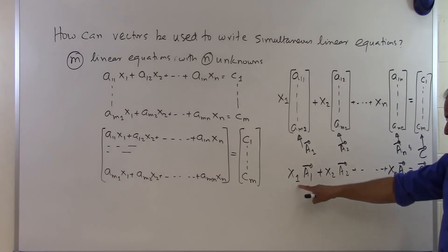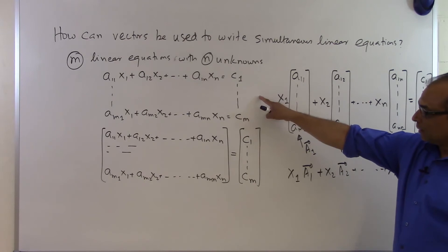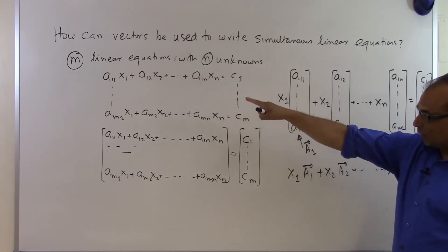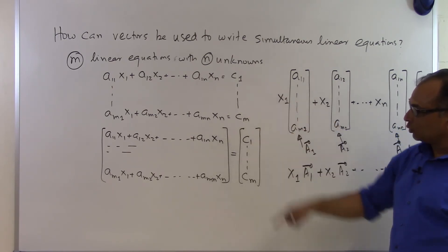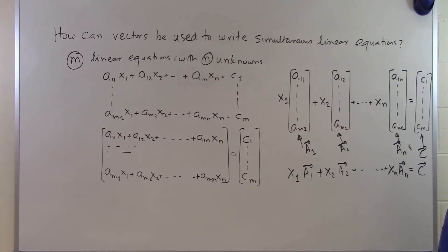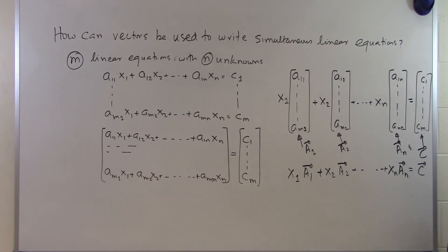If I'm able to find the solution to this linear combination of these n vectors equal to the c vector, then I have found the solution, because that's what I'm looking for: the values of x1, x2, all the way up to xn. Everything here is known — the coefficients a11, a12, and so on, as well as the right-hand sides — the unknowns are simply the x values. So if we are able to find the scalars which satisfy this linear combination equal to the c vector, we have found the solution. That's how we can use vectors to write simultaneous linear equations.